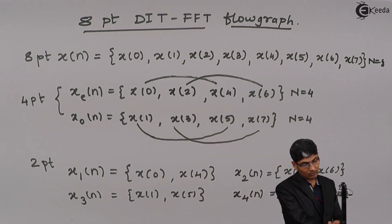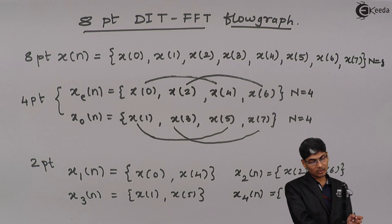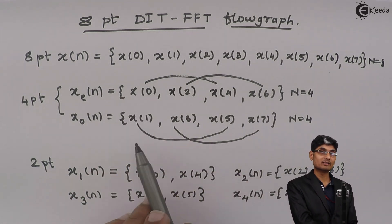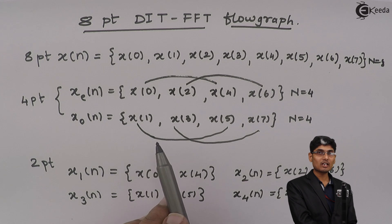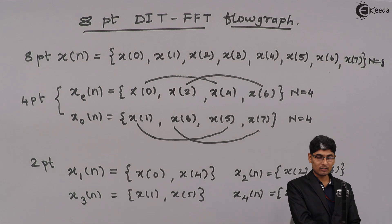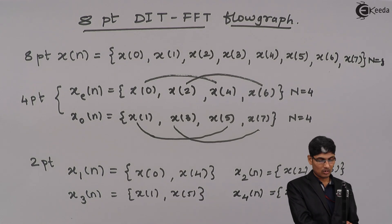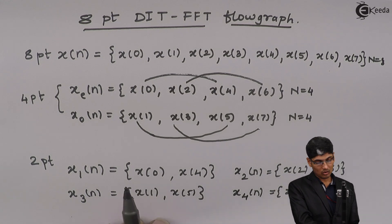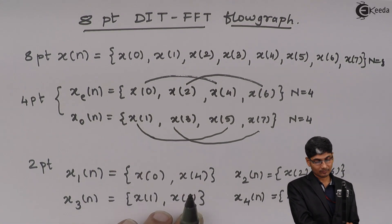We will be grouping first as an even set and an odd set. Within each of those, we will further have one even set and one odd set. Likewise, there will be groups of input samples. So now, let us go for the flow graph.